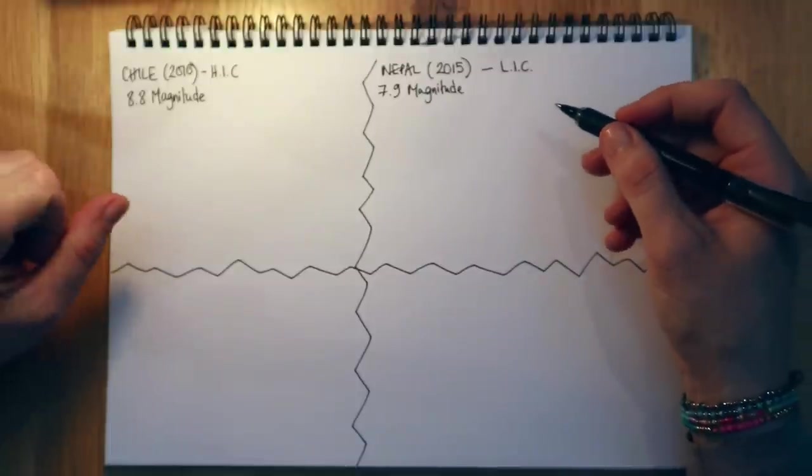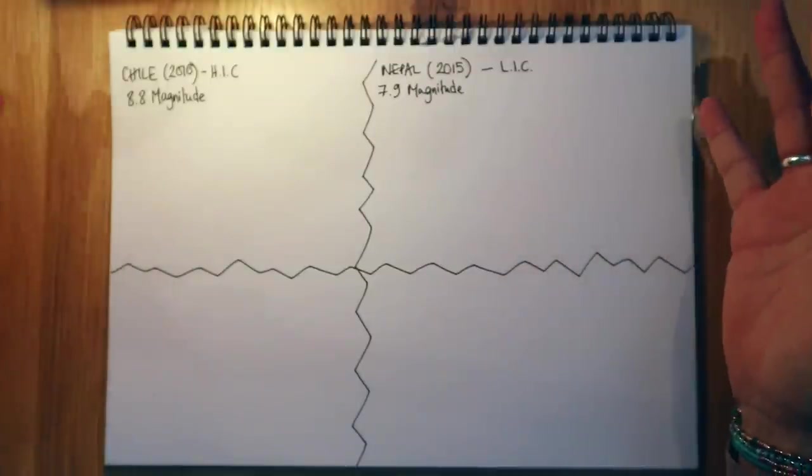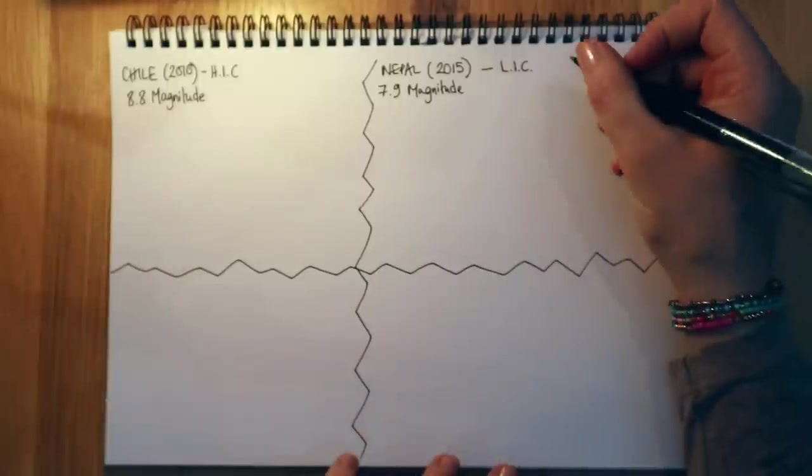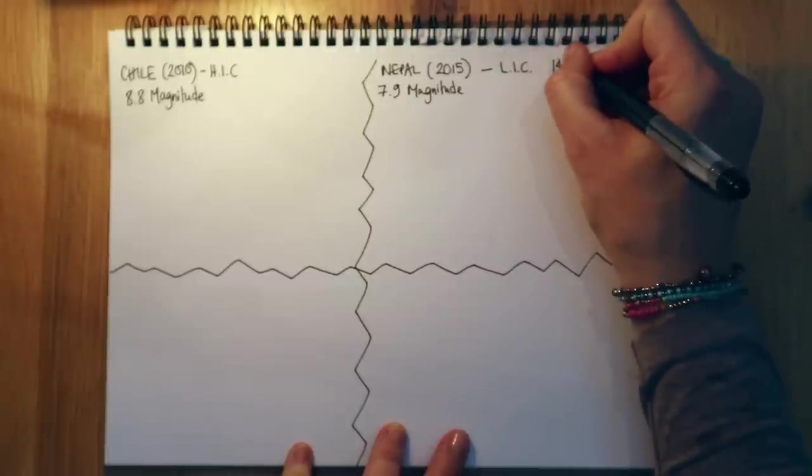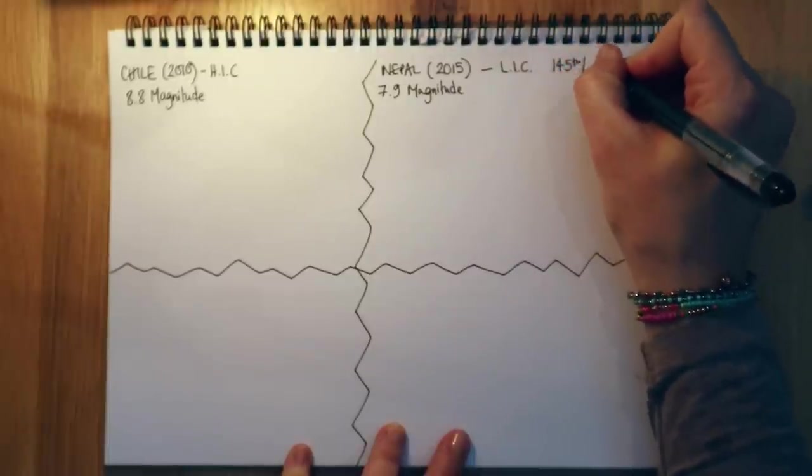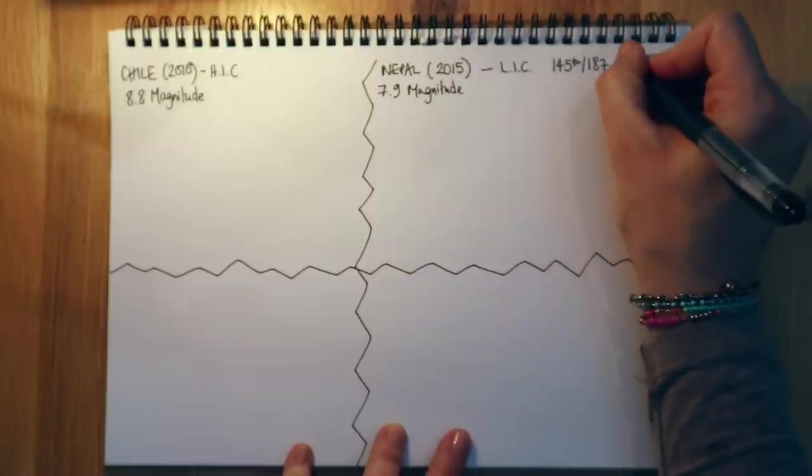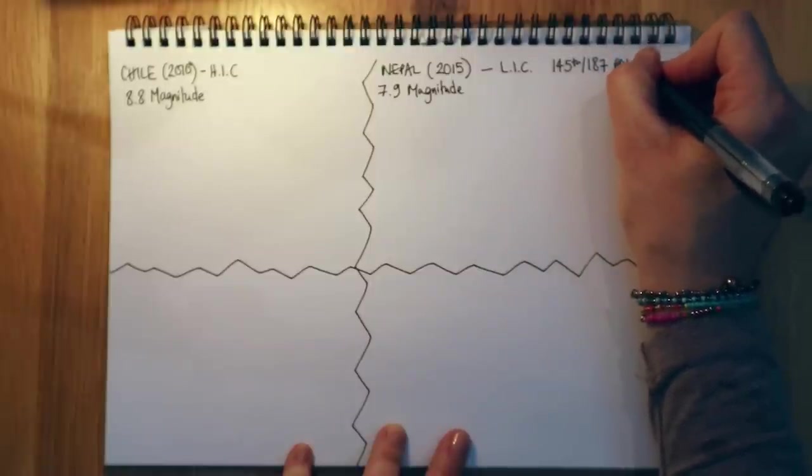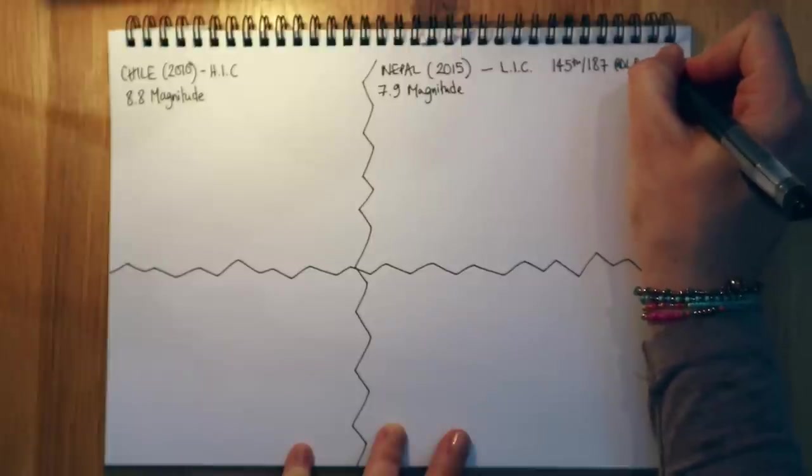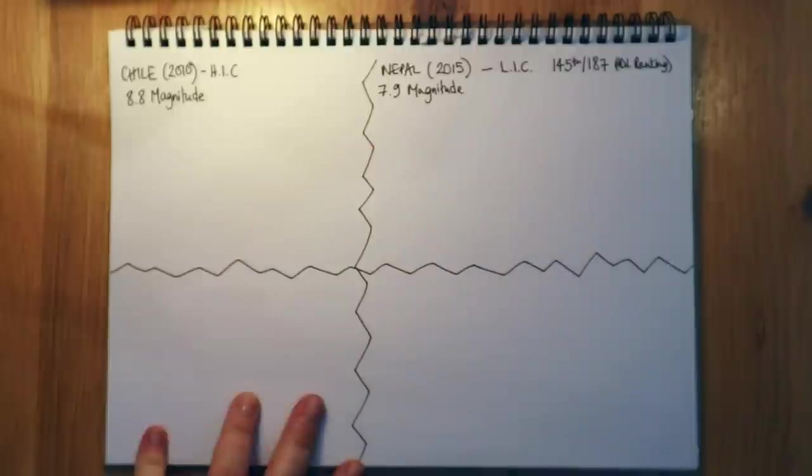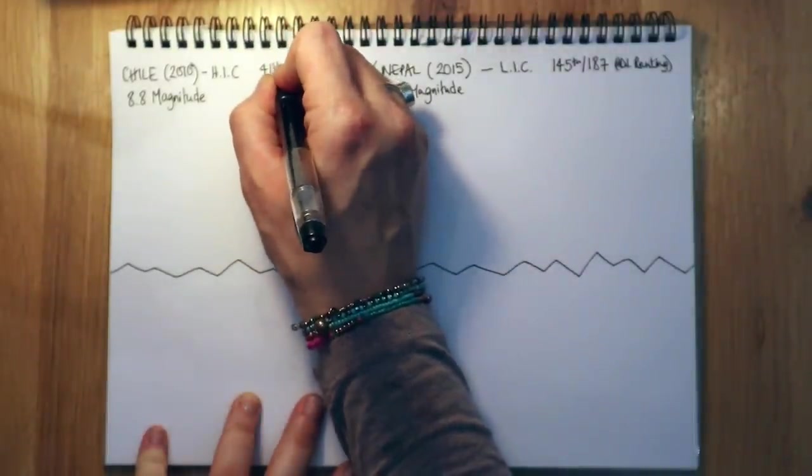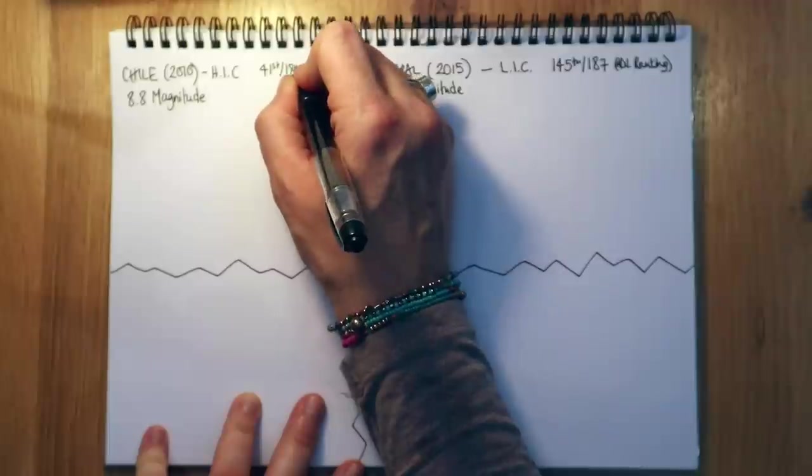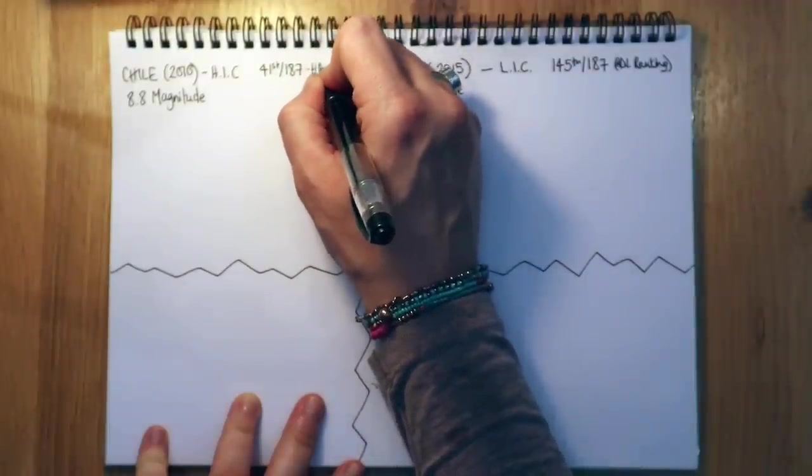We know Nepal is a low-income country because we know it has quite low wealth and also low services like healthcare and education. It's actually ranked 145th out of 187 countries on the Human Development Index ranking. So really quite low down. Whereas Chile, on the other hand,